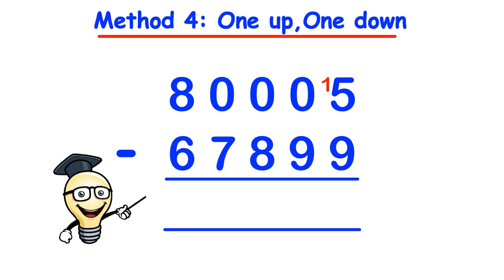This is the 1 up, and we look at the next digit along in the bottom row and put a 1 in front of that. This is the 1 down. Now with this 1 we add it to the actual digit. So the 1 plus the 9 becomes 10. So if we go back now we have 15 take away 9 which gives us 6 and we put that in the answer line.